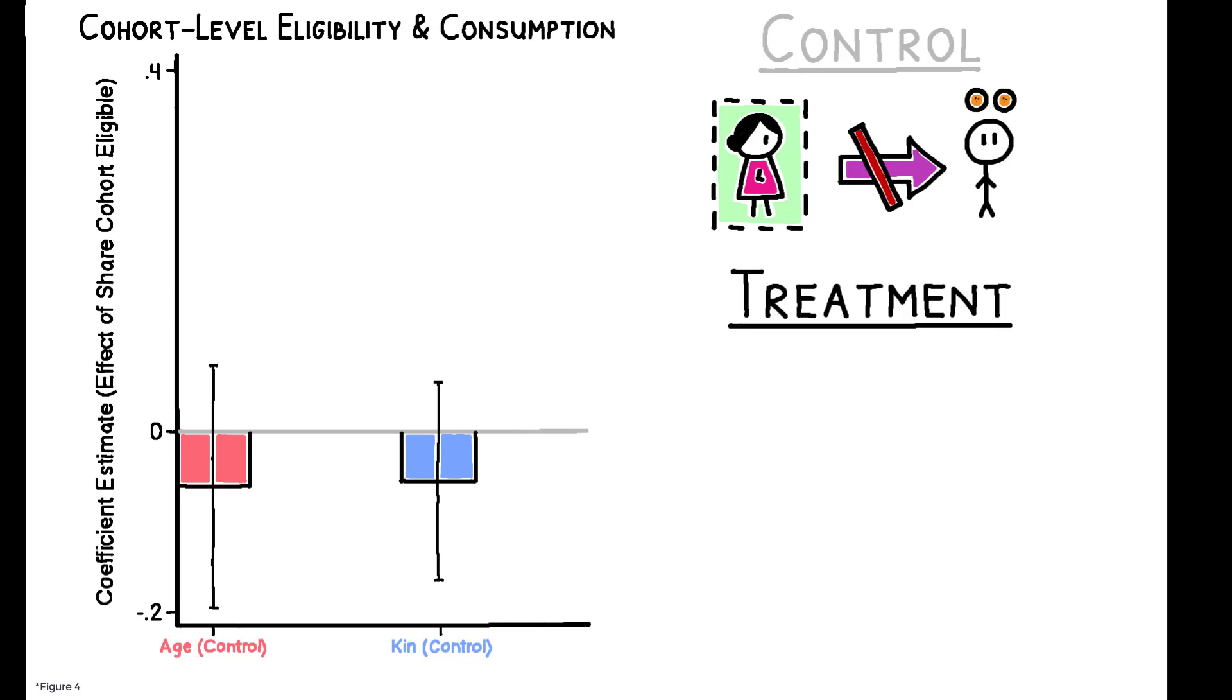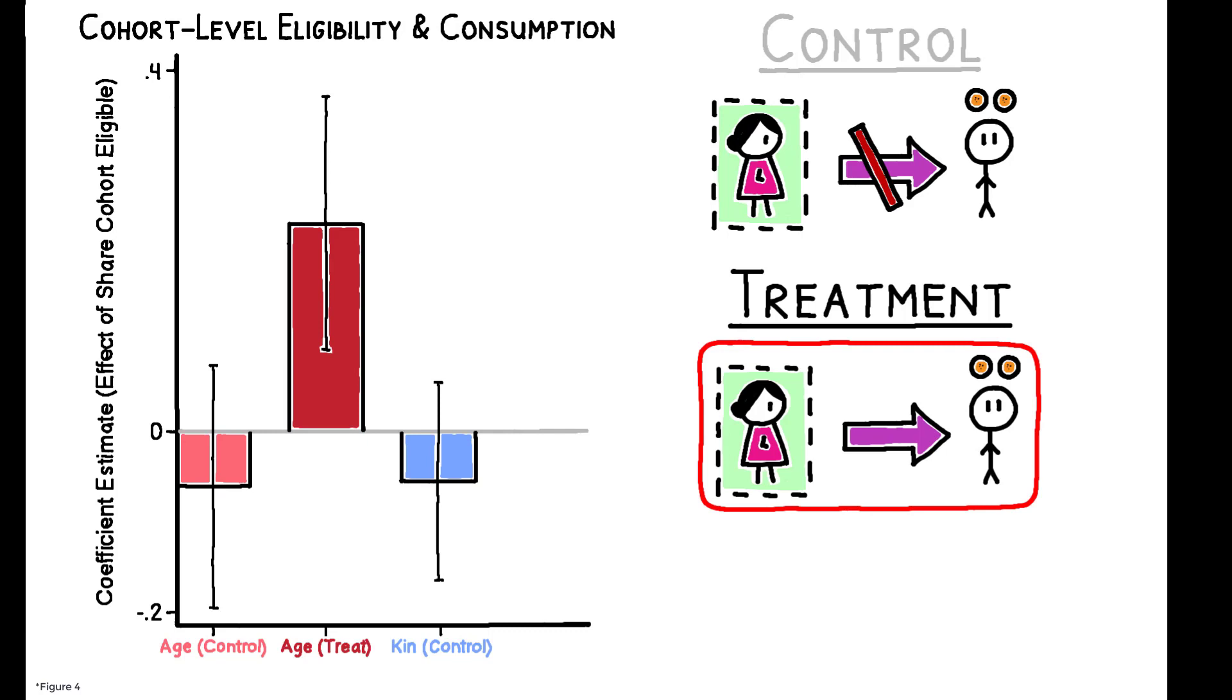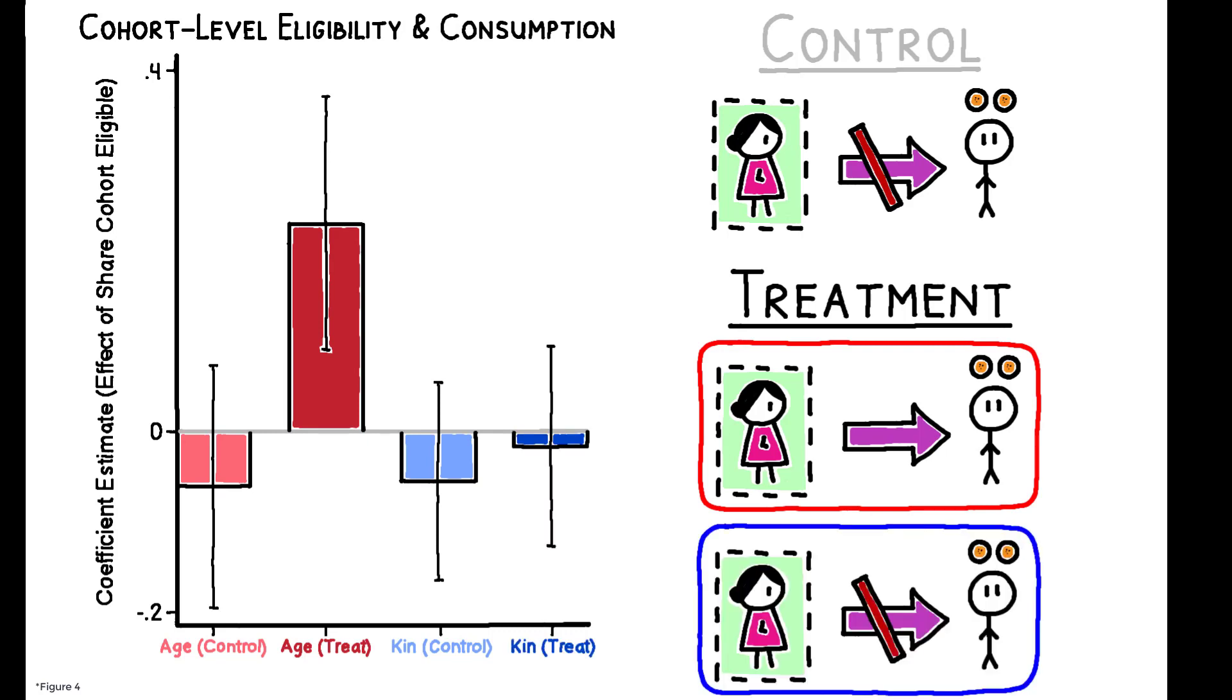But in the treatment group, a clear pattern emerges. Randomly increasing the income of other cohort members increases an individual's consumption in age-set societies, but not in kin-based societies.